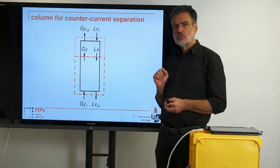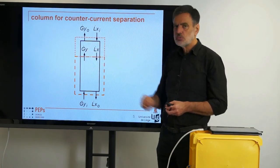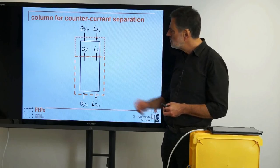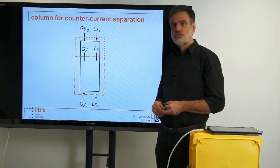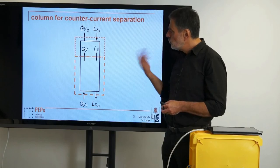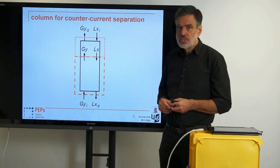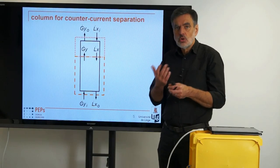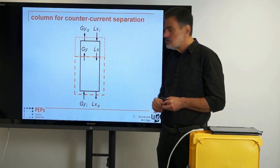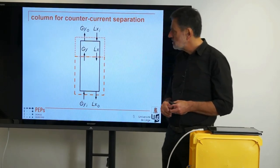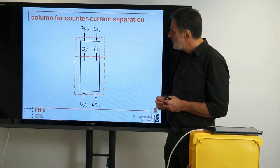Somewhere within that column we have a general Y and a general X that meet in between. What we want to do is link the different concentrations at different levels of this equipment section with a reasonable equation stemming from the balances. We are looking in the end for a linear operating line that links this intermediate concentration to those at the bottom and at the top, and the corresponding control volumes that allow us to derive that are shown in this diagram.